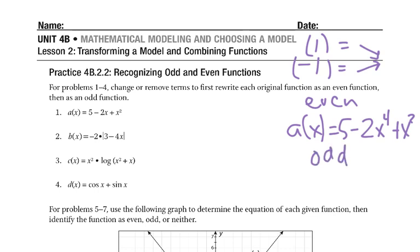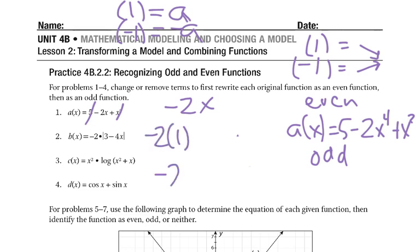So now for our odd, remember when it's odd, you have to make these give opposite answers. So the same number, but the opposite side. Probably the easiest way to do that would be eliminate those and just have negative 2x. Because if we did negative 2x times 1, we get negative 2. If we did negative 2 times negative 1, we get positive 2. So our odd would be a of x equals negative 2x.